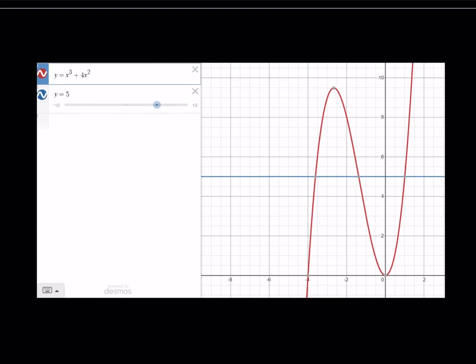Here we go. The graph of y equals x cubed plus 4x squared and y equals 5. You can see here the three intersection points. These are the radical ones. And this is the value where x equals 1. And of course, y is equal to 5.